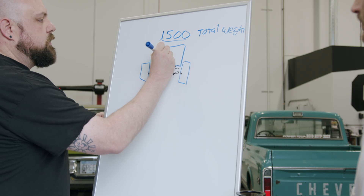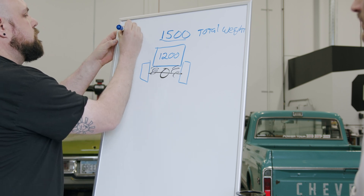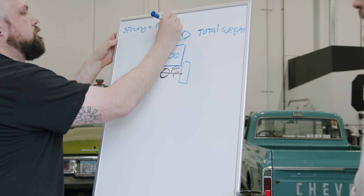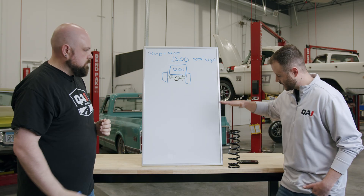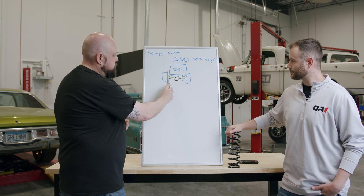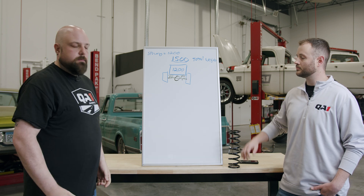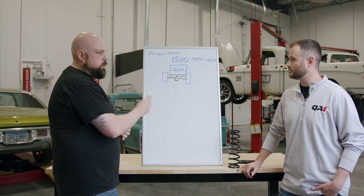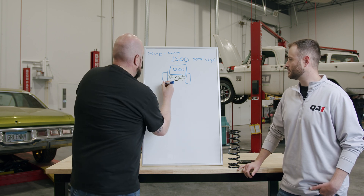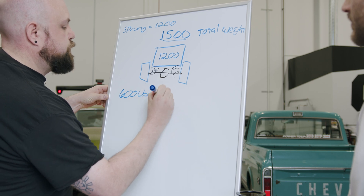So our sprung weight is 1200 pounds — that's just the weight acting on the springs themselves. There are two springs holding up that 1200 pounds, which means each spring is supporting about 600 pounds. So that's 600 pounds per spring.